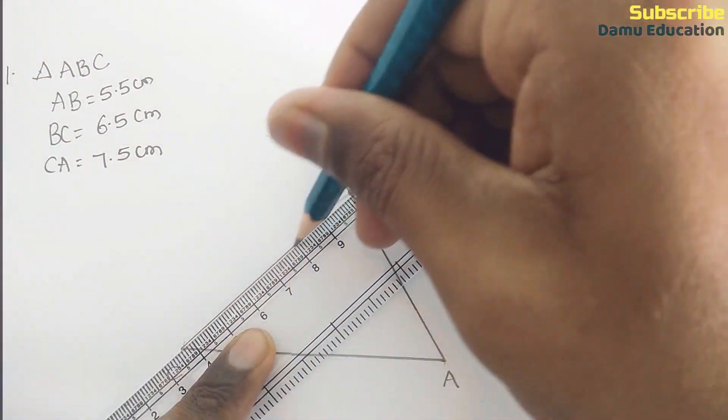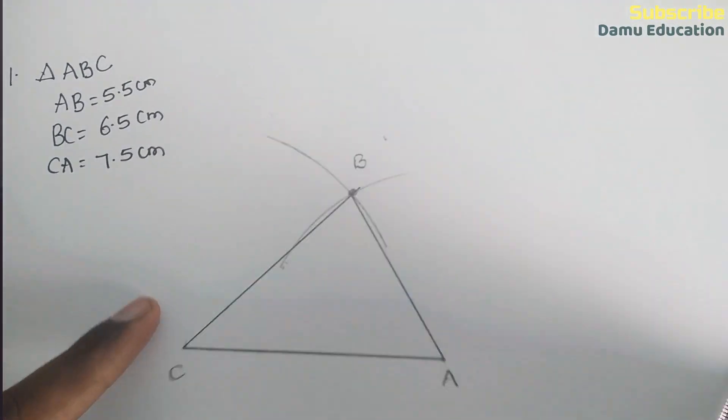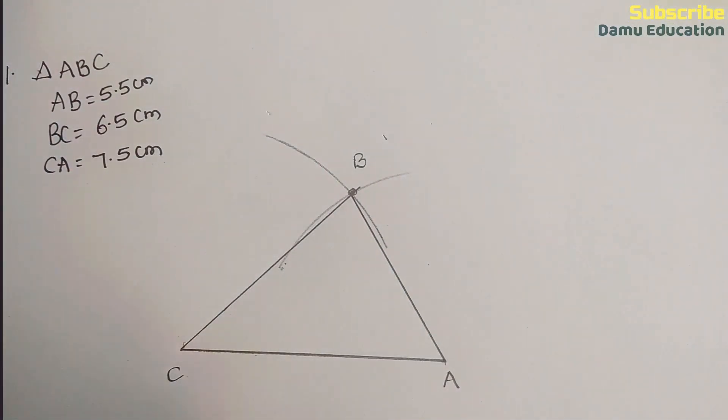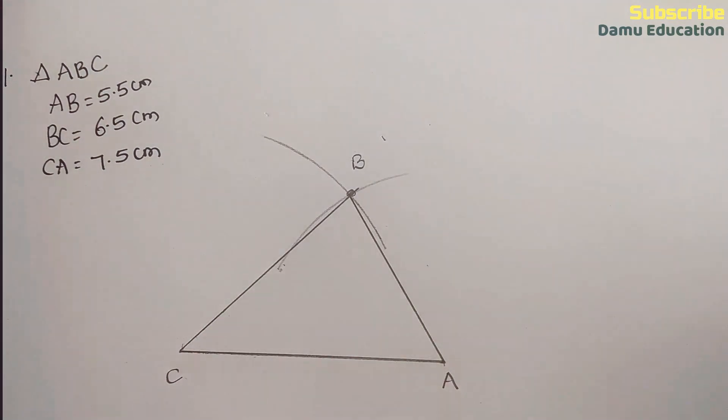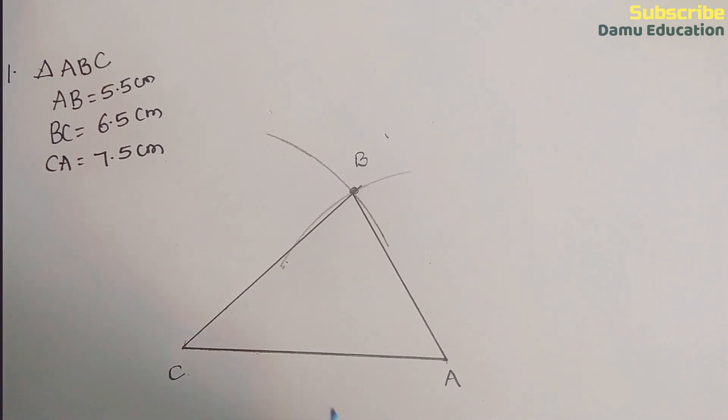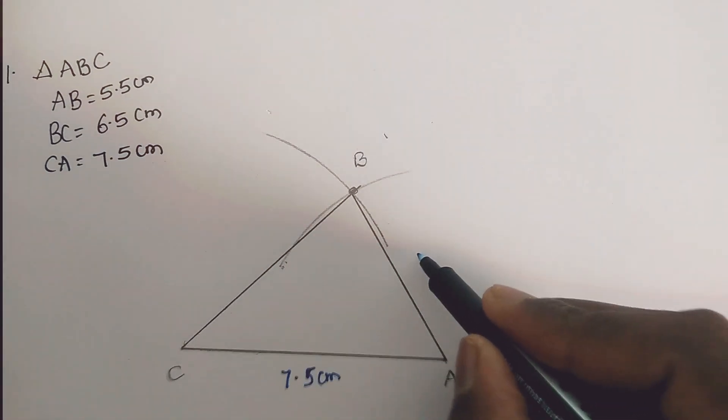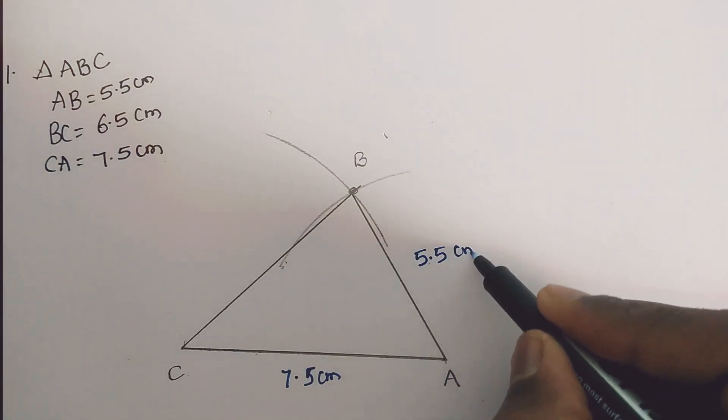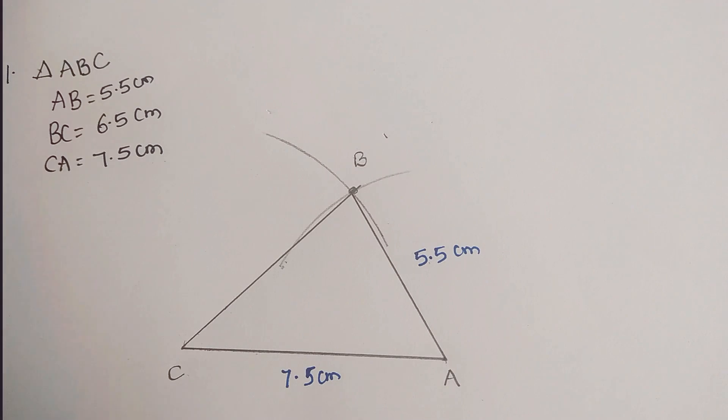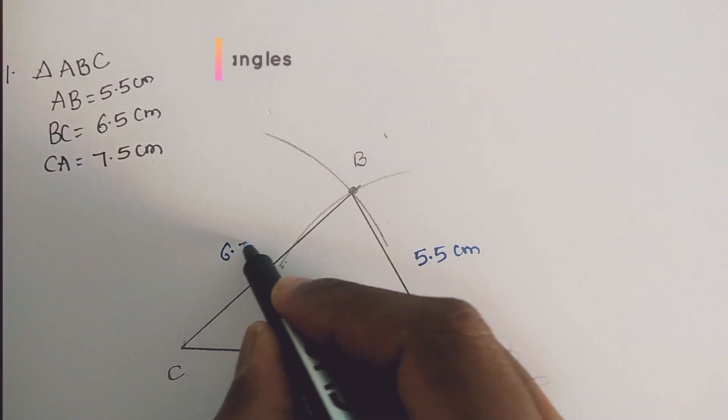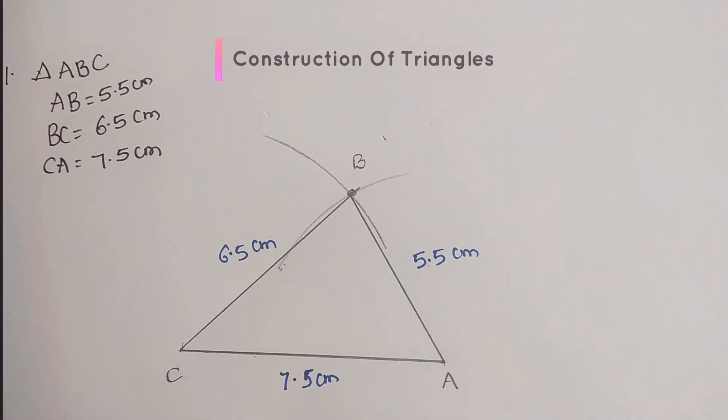Now we have constructed triangle ABC. Let's write the dimensions. CA equals 7.5 centimeters, AB equals 5.5 centimeters, and BC equals 6.5 centimeters. We have now constructed the required triangle.